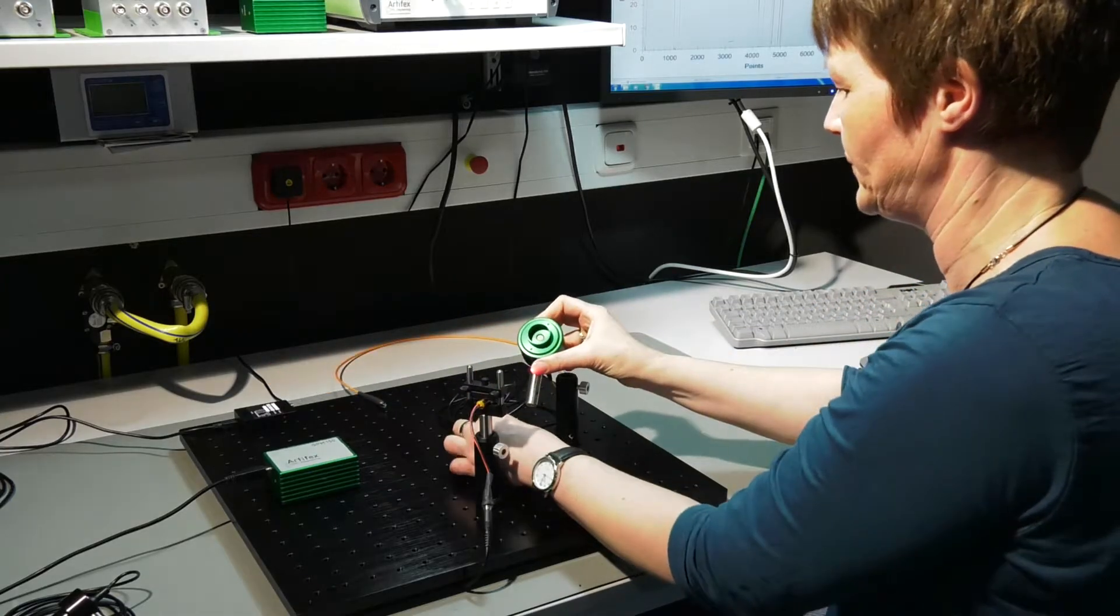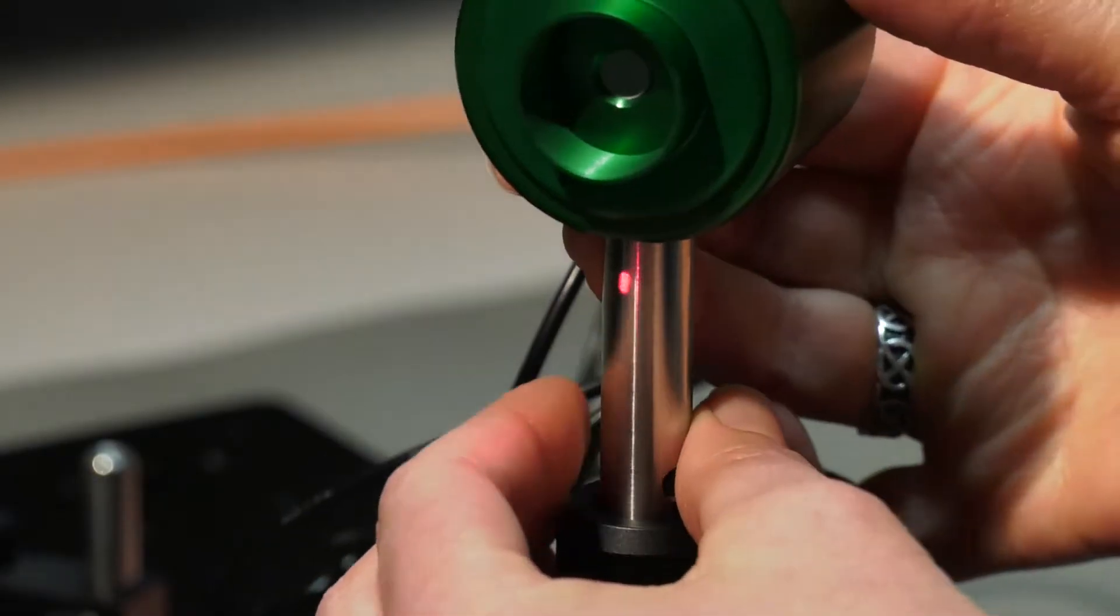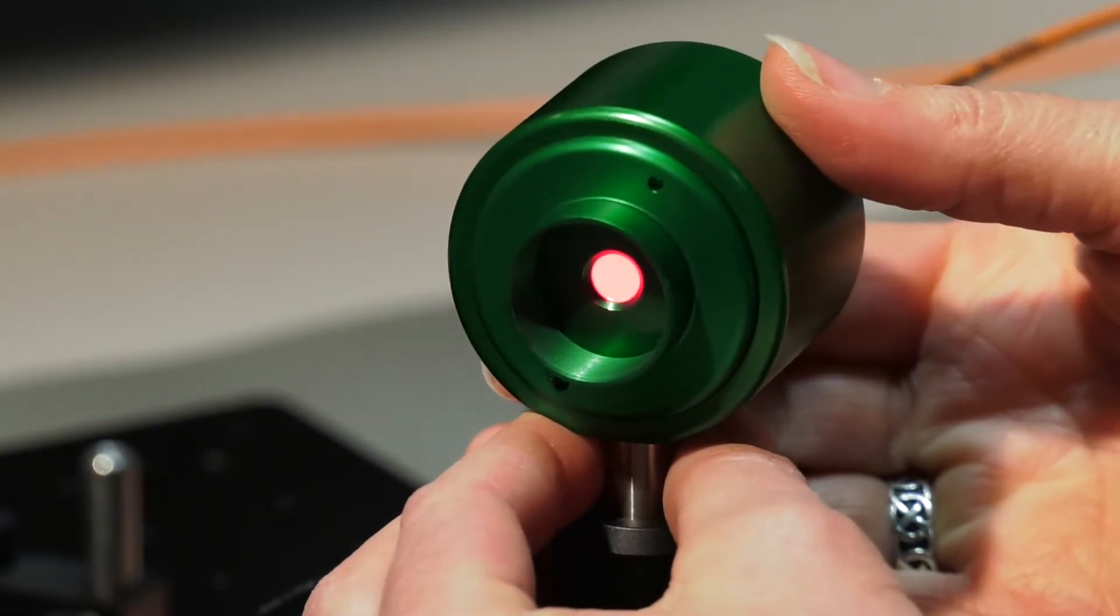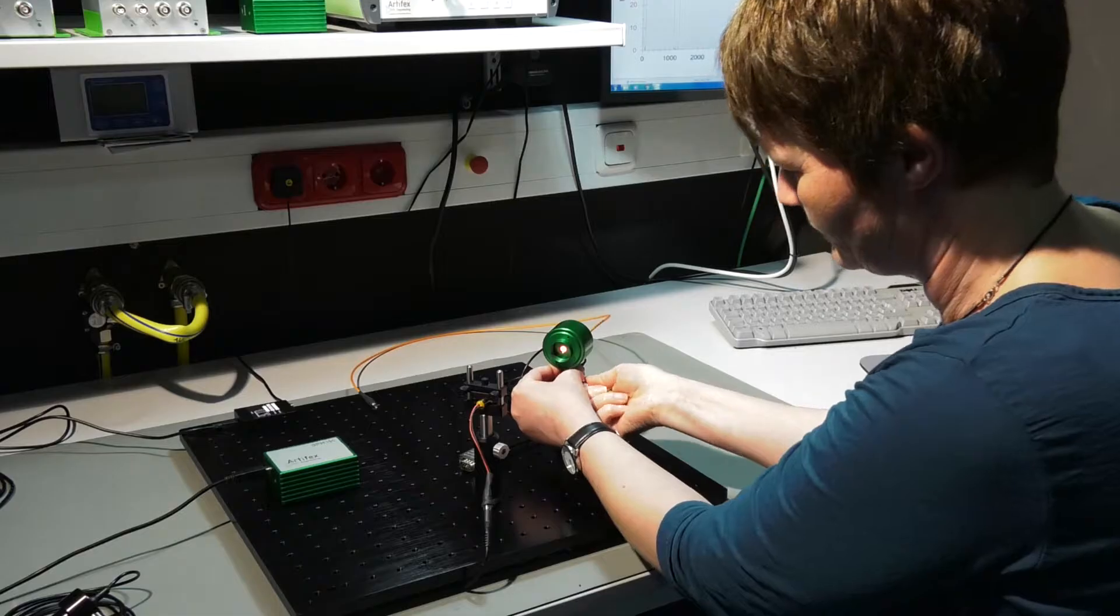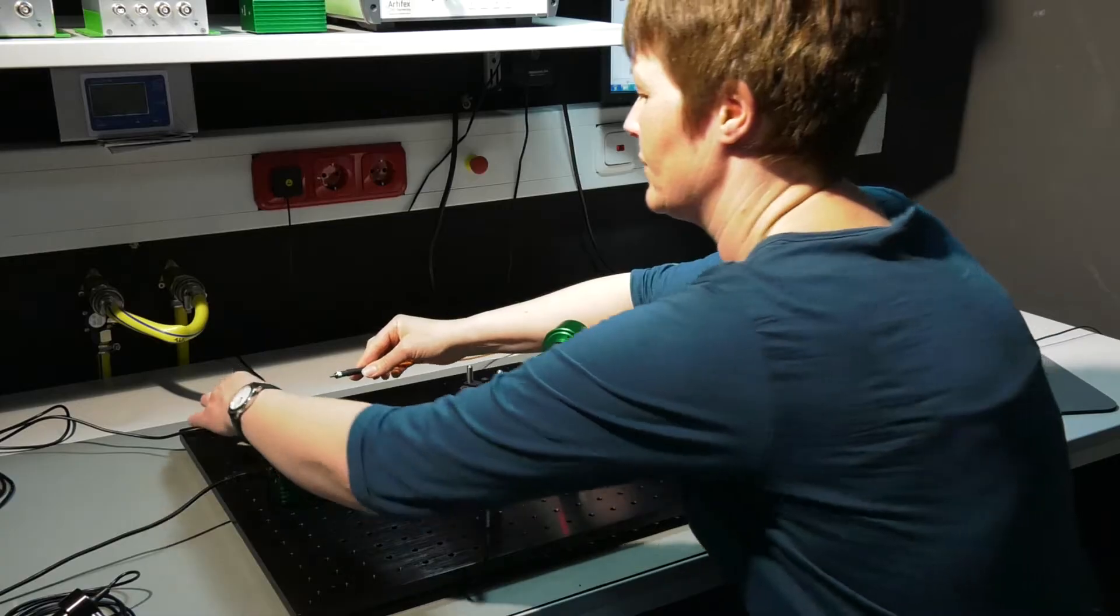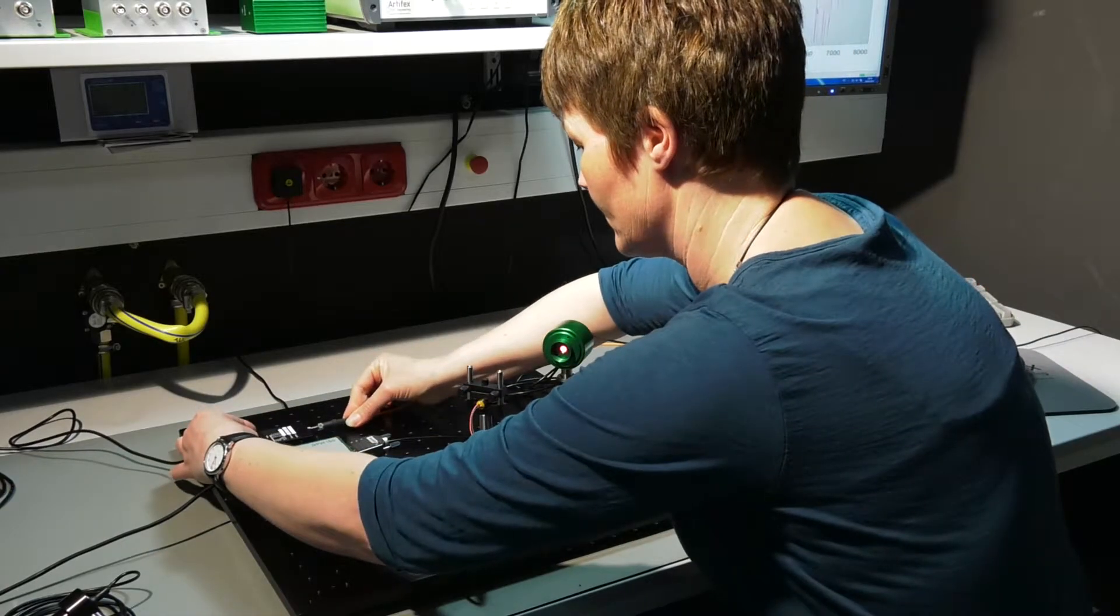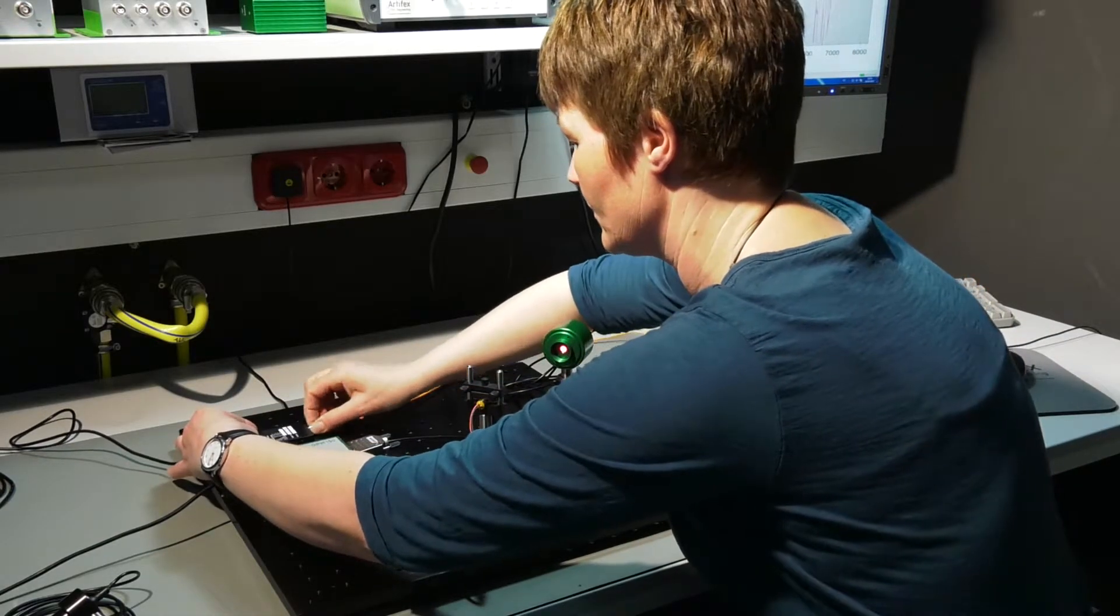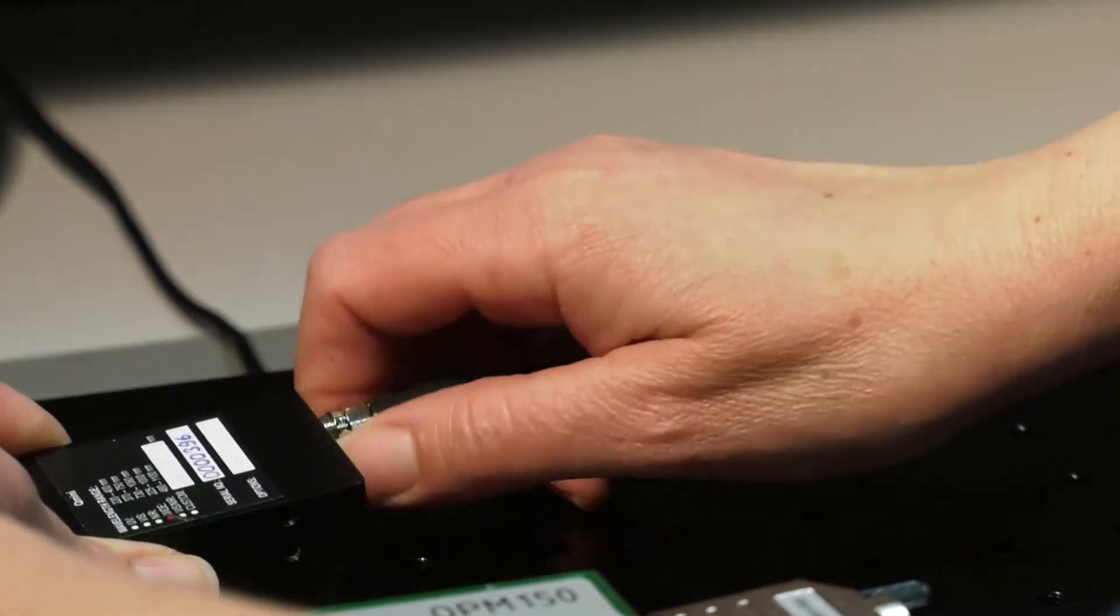Artifex Engineering manufactures integrating spheres which are directly compatible with the OPM 150 system. The polymer spheres cover the range from 250 to 2200 nanometers and powers from 50 nanowatts to 20 watts. They have a fiber port for spectral measurements with an external spectrometer.